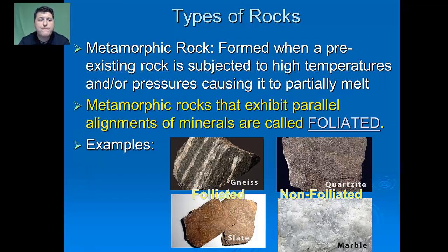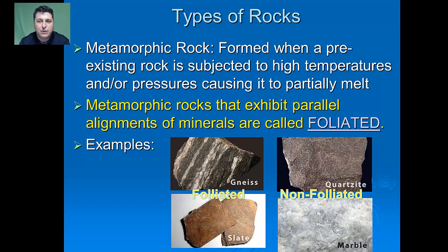Metamorphic rock forms when pre-existing rock is subjected to high temperatures and/or pressures, causing it to partially melt. Foliated metamorphic rocks form within the Earth's interior under extremely high, unequal pressure — greater in one direction than another. This causes the minerals in the original rock to reorient themselves, with long and flat minerals aligning perpendicular to the direction of greatest pressure, giving the rock a striped look.